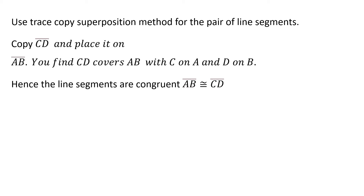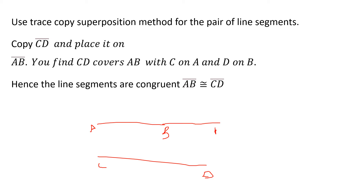The next topic is: use the trace copy superposition method for a pair of line segments. Here we have AB as one line segment and CD as another. How are we verifying that they are congruent? We use the trace copy superposition method. That means copy CD - keep a scale, measure it, and place it on AB.